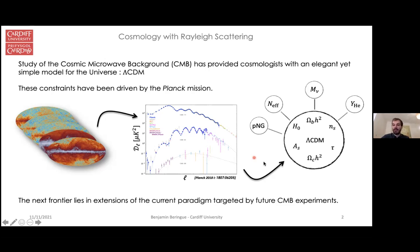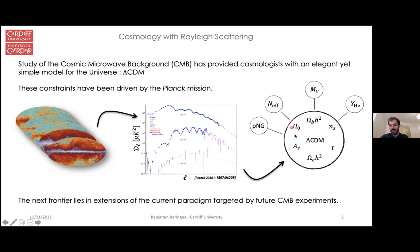E-modes and B-modes are two orthogonal polarization modes. We use them because they are sourced by different primordial perturbations — for example, B-modes are not sourced by scalar perturbations, only by tensor perturbations. From the angular power spectrum we can infer values for the Lambda CDM parameters: h-naught, omega_b, omega_c, and others. There is currently a small tension regarding the precise value of H-naught, the current rate of expansion, differing between CMB inference and local universe supernovae measurements.